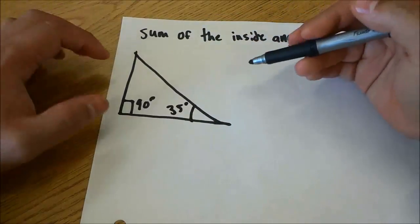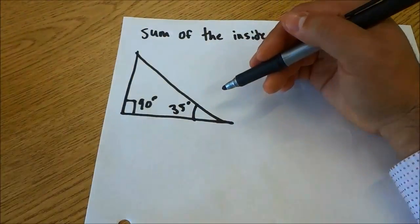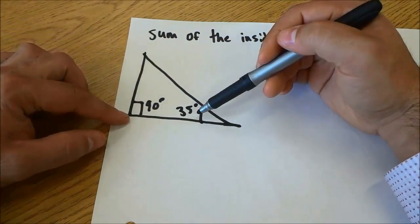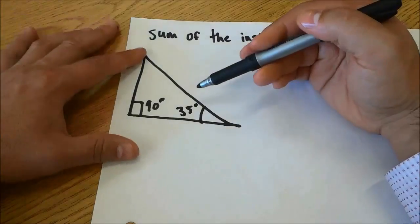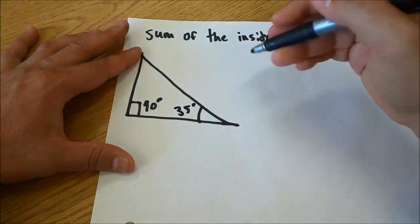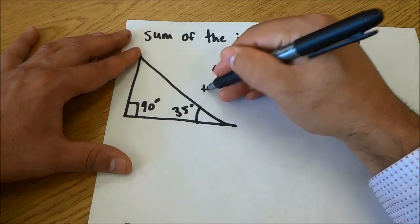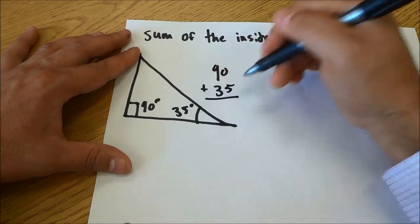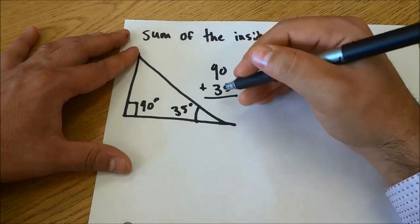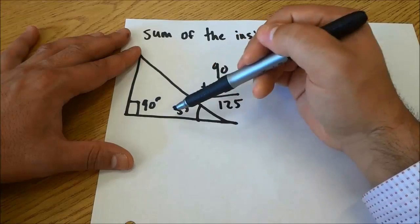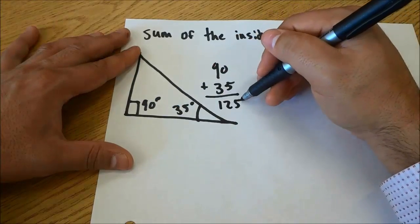In order to calculate the missing angle, you need to add the two angles that you have. You need to add them together. So we have 90 and 35. I'm just going to do 90 plus 35 and that is equal to 125.